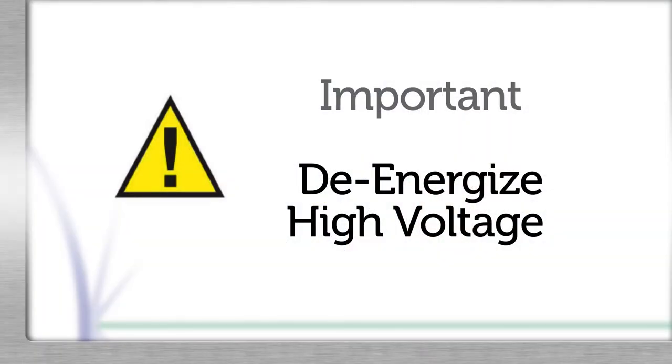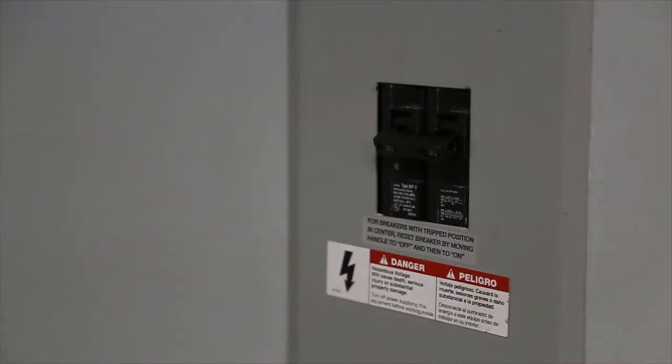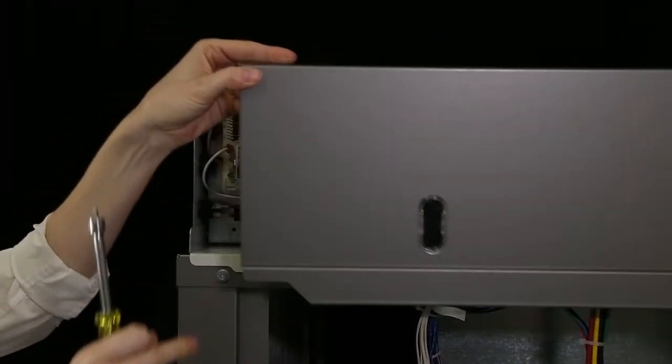Before proceeding to the next step, de-energize the high voltage connected to the unit. Once power is disconnected, remove the control panel cover from the control panel mounted on top of the unit.